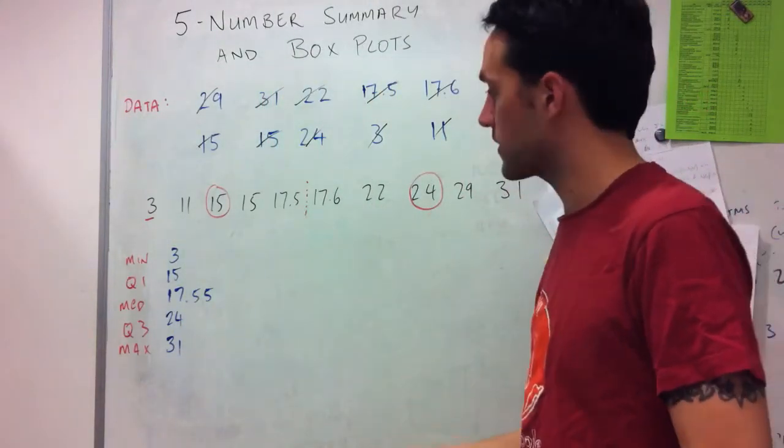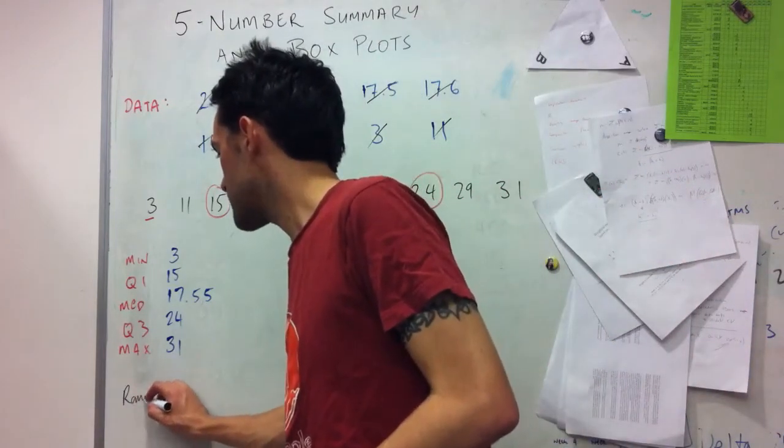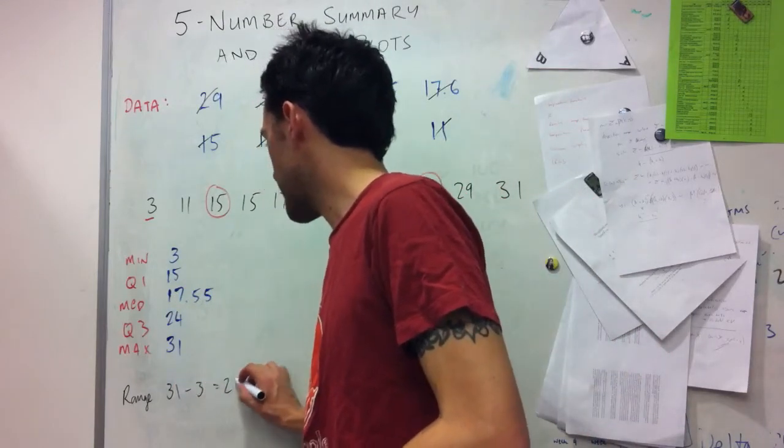From this, I have a few calculations that I can do. So for instance, I get the range here, which is the maximum minus the minimum, 31 minus 3 equals 28.